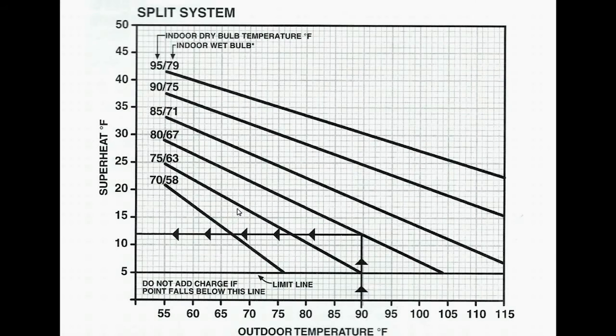So while the system is running and stabilizing, you're going to want to pull the electrical panel off of the condensing unit and you'll find your charging chart will be on a sticker inside there next to the schematic diagram.